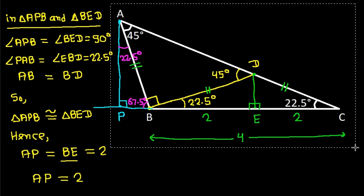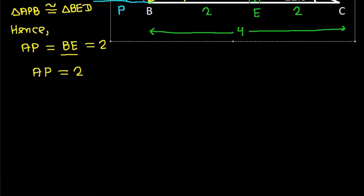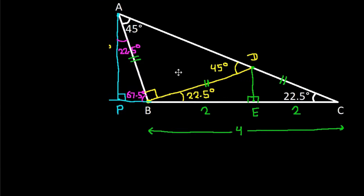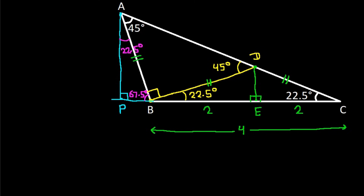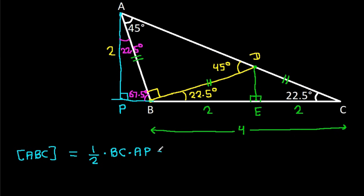So we get AP is 2. Now the area of triangle ABC will be one half times base BC times height AP. It is one half times 4 times 2. The 2 will get cancelled, so the area is 4.